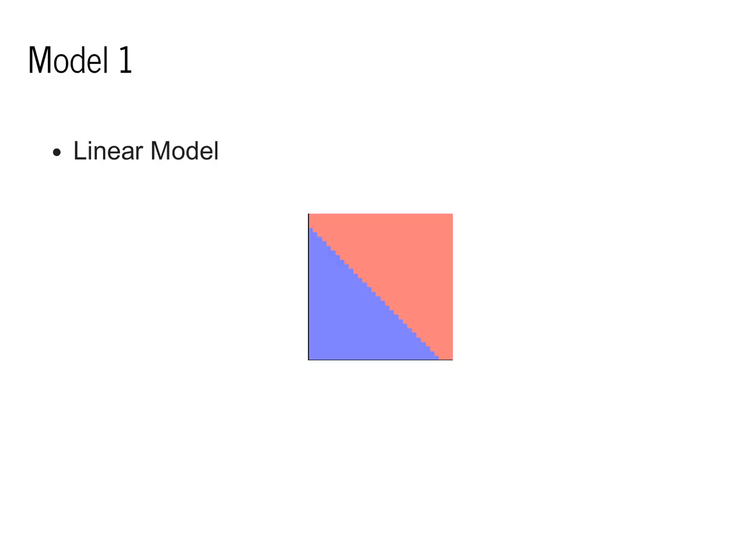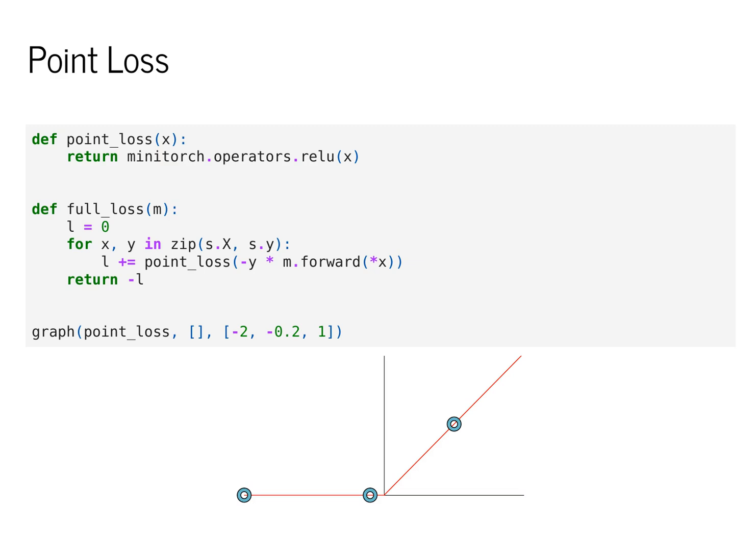We've particularly focused so far on linear models. Linear models correspond to shapes of the following form. We're going to divide the red side and the blue side of our decision boundary based on a line. We've talked about several different losses, but let's stick with a ReLU-based loss for its simplicity.